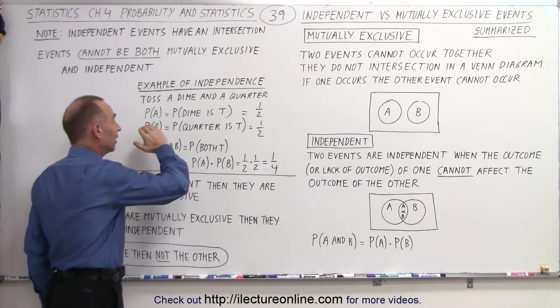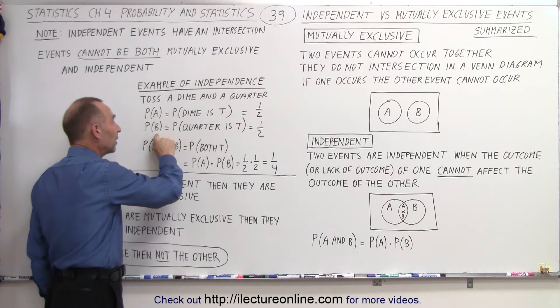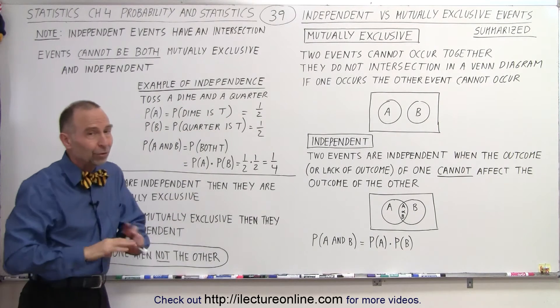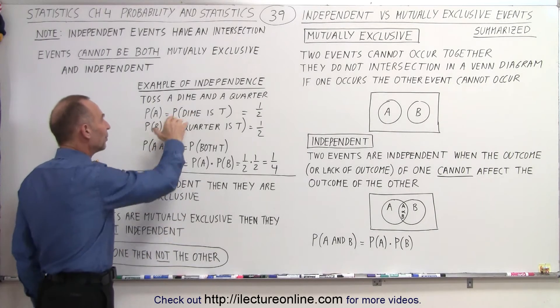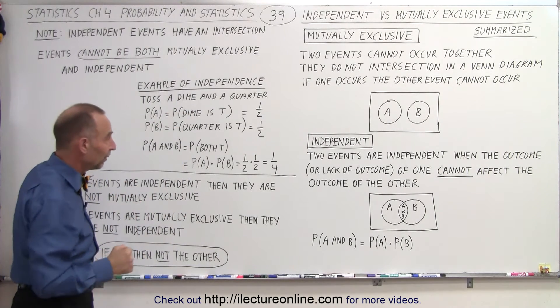And you can clearly see that it doesn't matter what the outcome of A was. It doesn't matter if the dime was tails or the dime was heads. The probability of B, the quarter being tails, is completely independent of what happened to A, and vice versa as well.